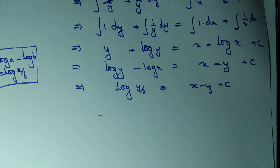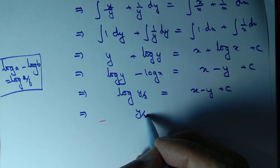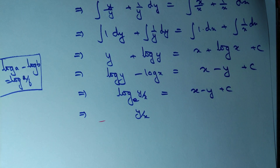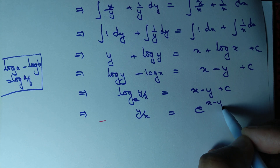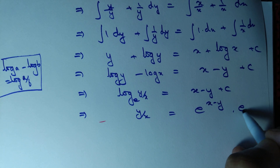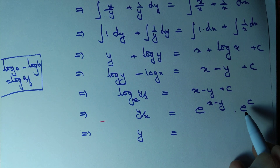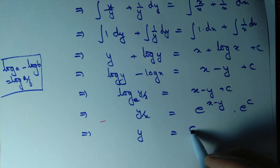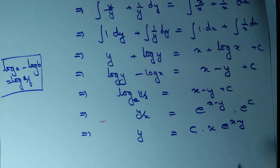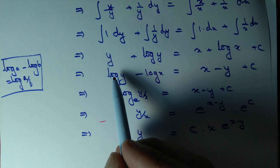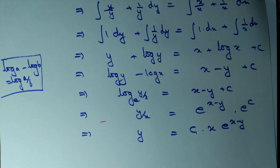Now since log and exponential are inverse of each other — and in calculus, log means log base e — we get y/x equal to e^(x minus y) times e^C. So y equals C₁ times x times e^(x minus y), where C₁ is an arbitrary constant. We could have stopped at the logarithmic stage as well — it is up to you.